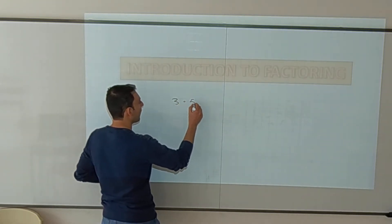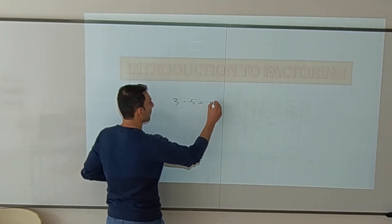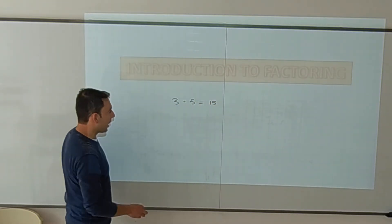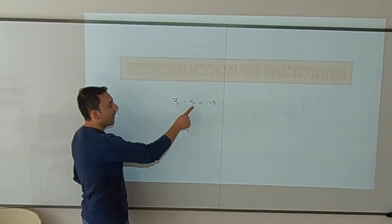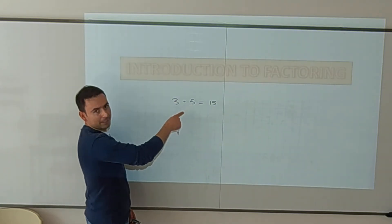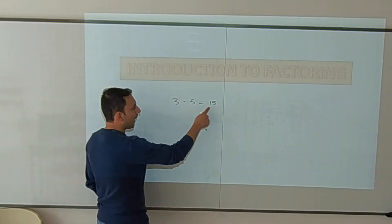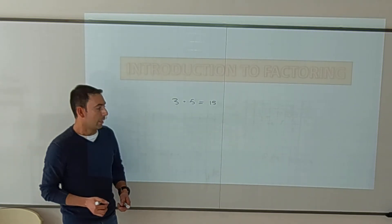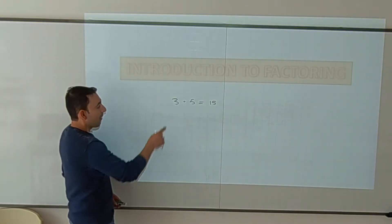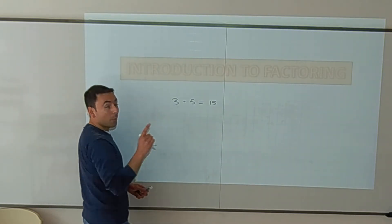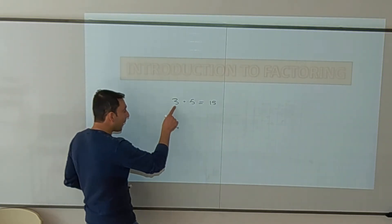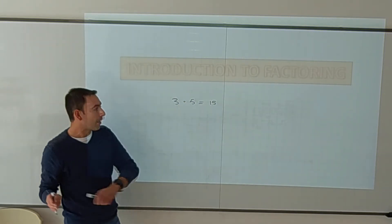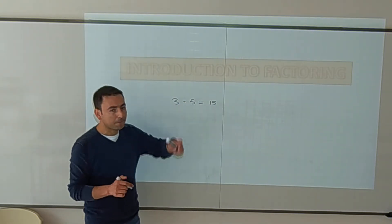3 times 5 equals 15. In this multiplication, 3 is one factor, 5 is another factor, and 15 is the answer, or the product. We can also say that 3 times 5 is a factorization of 15.